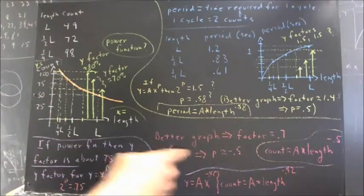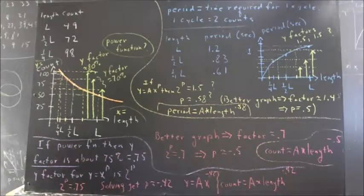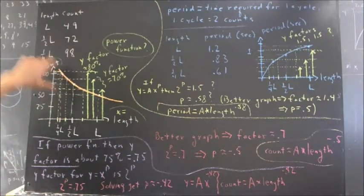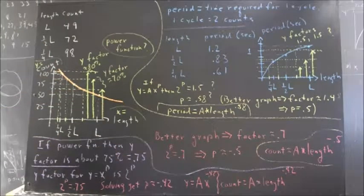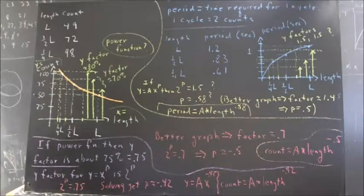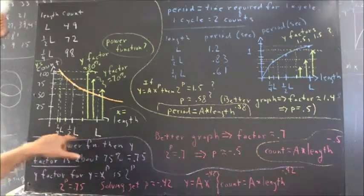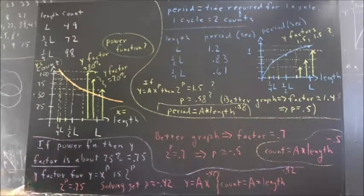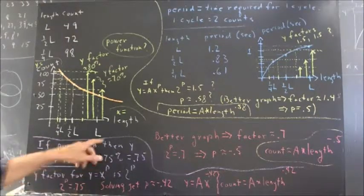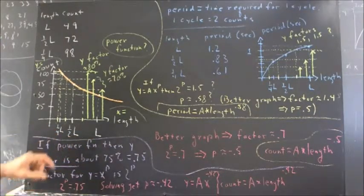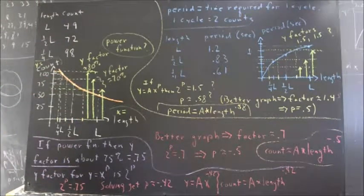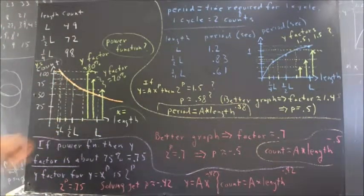Counting 1, 2, 3, 4, 5, 6, etc. So we draw a graph of count versus length. We didn't measure the length of the pendulum using anything, but we doubled the string and then doubled the string again, kind of folding it in half and folding it in half.